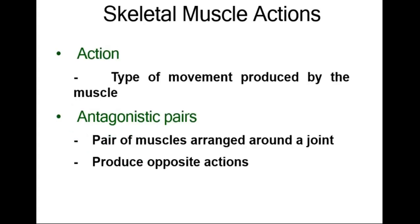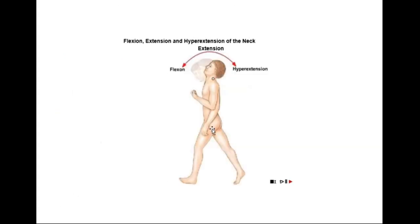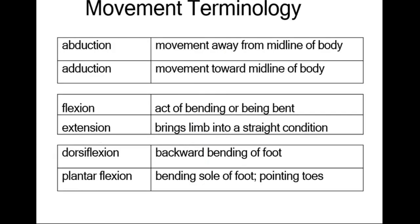Please remember: origin is the less mobile bone, insertion is the more movable bone. Skeletal muscle action refers to the type of movement produced by a muscle. Antagonistic pairs are pairs of muscles arranged around a joint that produce opposite actions — for example, flexion, hyperextension, and extension of the neck.